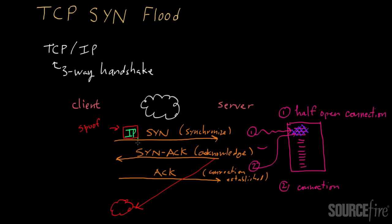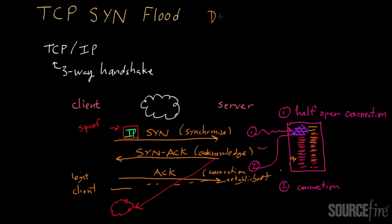The server will keep allocating space for these half-open connections, and gradually that space will get filled up. When the state space is full, legitimate requests can no longer be handled — a legitimate client sending a SYN request to the server will find that the server has nowhere to allocate information, so it will just drop the request. In some cases, depending on the implementation, some servers might actually crash once they've used up all available space. In either case, this is a denial-of-service attack — specifically the TCP SYN flood — and it prevents legitimate parties from gaining access to the service.